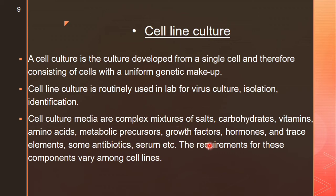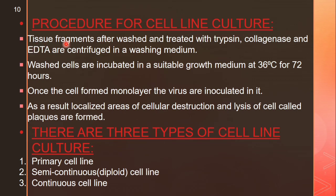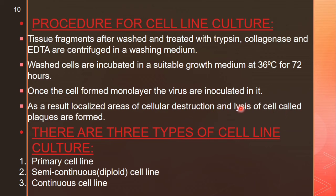These media requirements are important to limit the growth of other organisms like bacteria or fungi. For the procedure of cell line culture, tissue fragments are washed and treated with trypsin, collagenase, and EDTA, then centrifuged in a washing medium. The washed cells are incubated in a suitable growth medium at 36°C for 72 hours. Once the cells form a monolayer, the virus is inoculated on it. As a result, localized areas of cellular destruction and lysis of cells, called plaques, are formed.